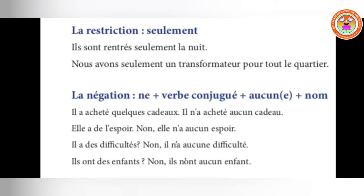Il a de l'information — information is masculine, so they use the masculine form: Il n'a aucun... The key point here: in passé composé, wherever the past participle comes in a sentence, aucun can be written after the past participle. But ne...pas is not written after the past participle — it is written before the past participle. That is the difference.